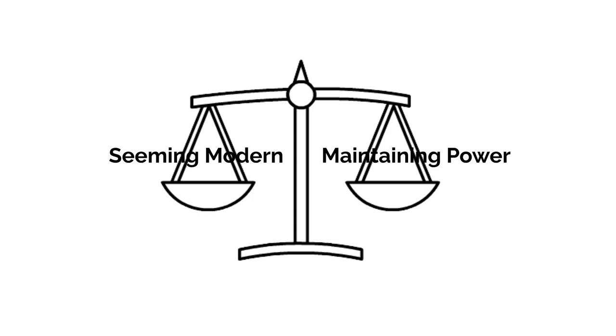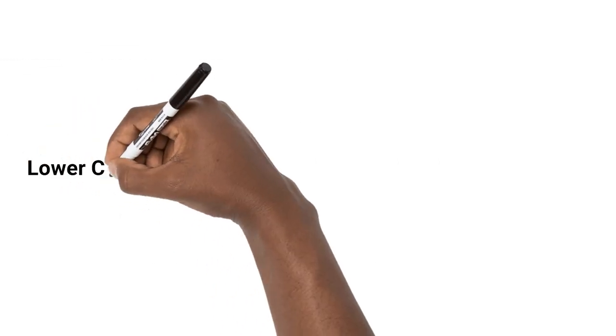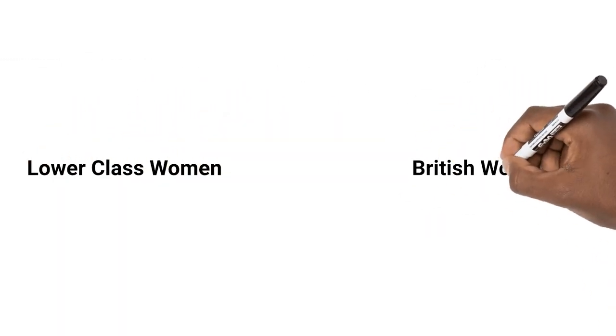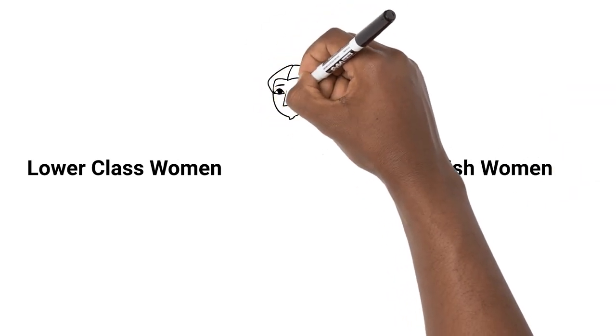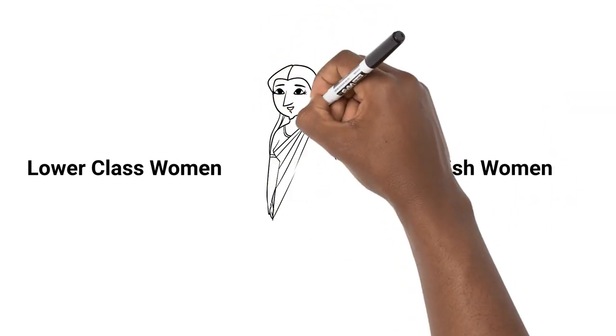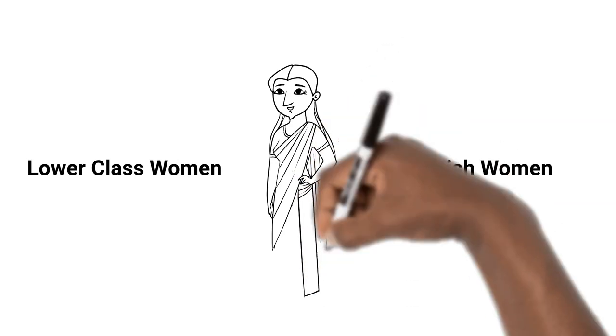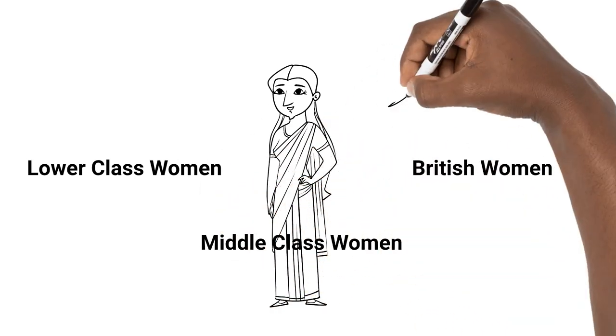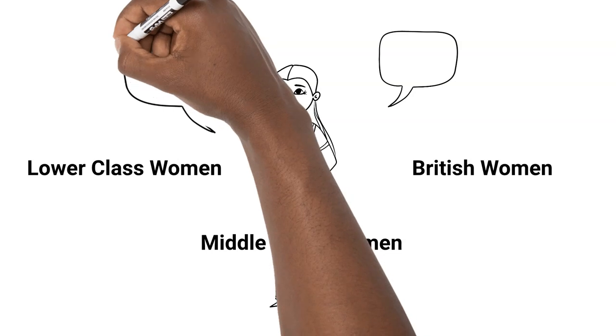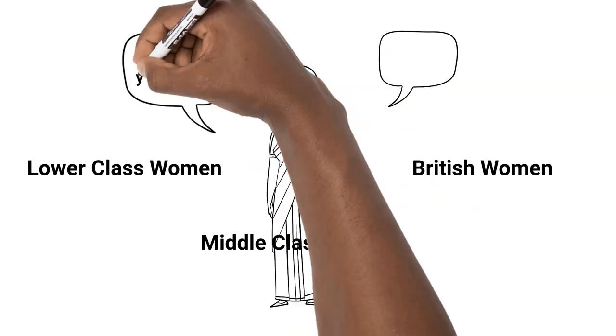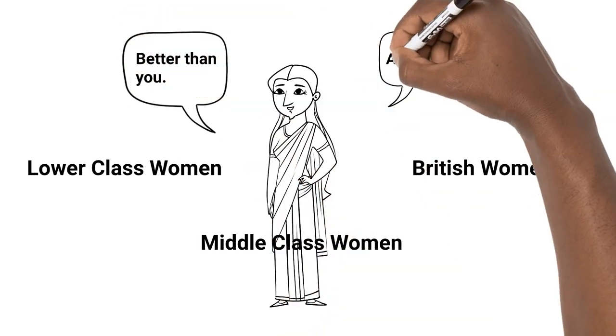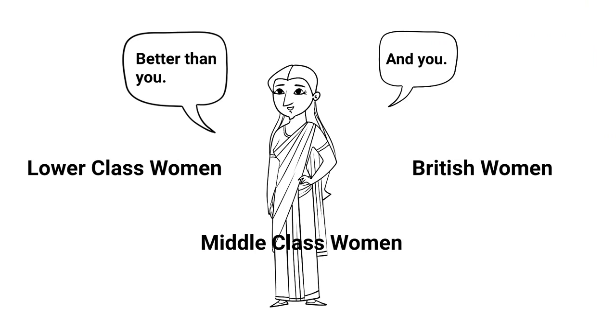For example, take the question of education for women. The middle class's answer to this question shows these two opposite impulses at work. They saw education as good for women as long as they didn't actually use it. Basically, according to reformers, education was good because it made middle class women culturally superior to lower class women who didn't have that education, as well as superior to British women who used that education to compete with men.